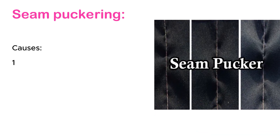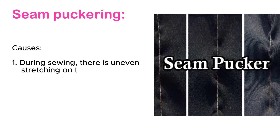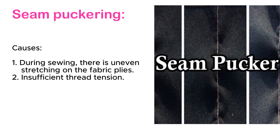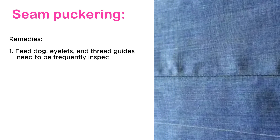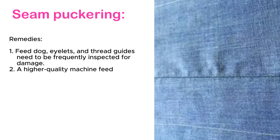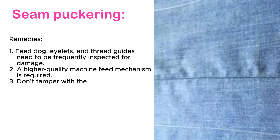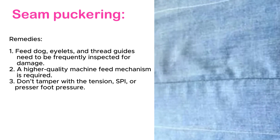Seam puckering. Causes: during sewing, there is uneven stretching on the fabric plies. Insufficient thread tension. Remedies: feed dog, eyelets, and thread guides need to be frequently inspected for damage. A higher quality machine feed mechanism is required. Don't tamper with the tension, spit, or press foot pressure.